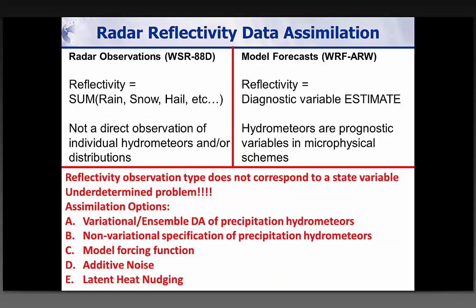A bit of background: radar reflectivity is a complicated function of various precipitating hydrometeors. It's not a direct observation of individual hydrometeor types, but is impacted by a combination of all of them. In model forecasts, reflectivity is traditionally a diagnosed variable — an estimate from prognostic variables of individual hydrometeors, which are dependent upon the individual microphysics scheme.